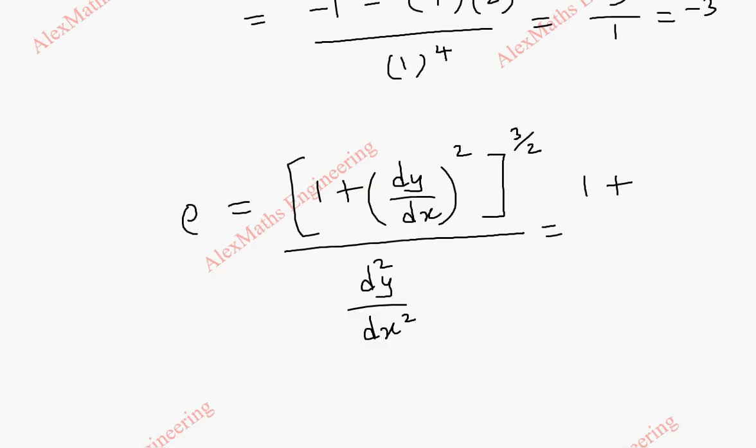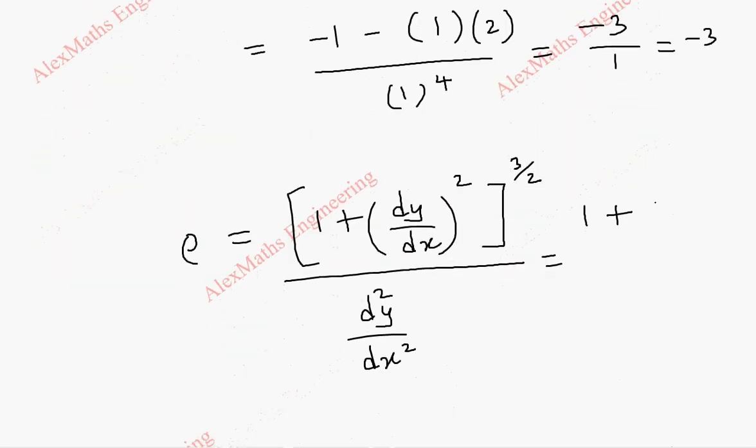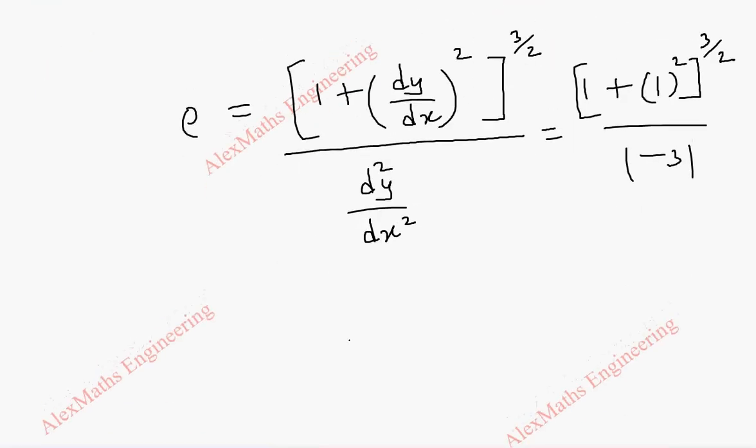Then 1 plus, we got the dy by dx value, which is 1. So here, it is 1 square, which is again 1 only, whole power 3 by 2 divided by minus 3. We take its magnitude, so we take only the positive value.